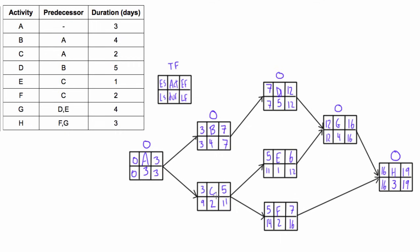Activity C: the total float would be 9 minus 3, that's 6, or conversely 11 minus 5 is also 6, so C's total float is 6. Activity E: 12 minus 6 is 6, or 11 minus 5 is 6, so its total float is 6. Activity F: 16 minus 7 gives us a total float of 9, and you can also verify that with 14 minus 5, which also gives 9. By inspection, each node with a total float of 0 forms the critical path — let's outline it here in red.